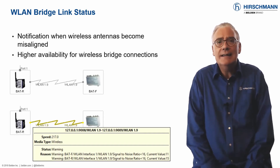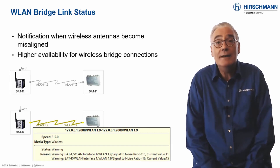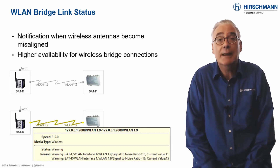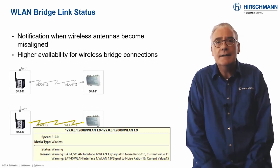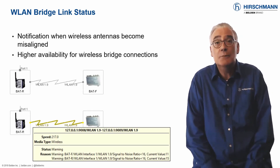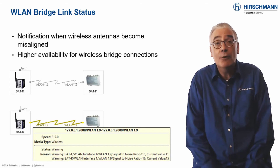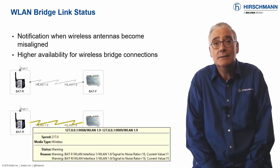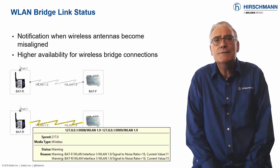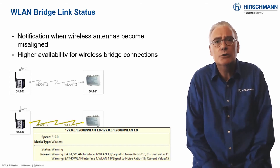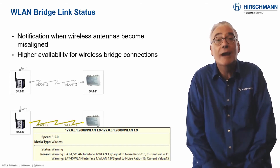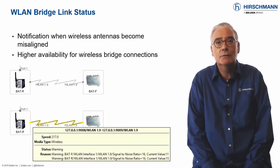Industrial HiVision can generate alarms when the antennas start to become misaligned. This gives you time to readjust the antennas before the bridge link fails, helping you to ensure reliability of the link.